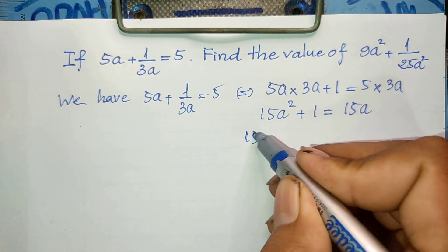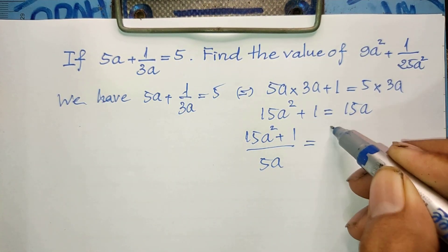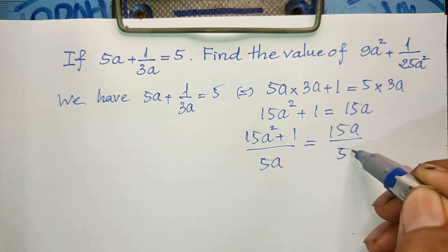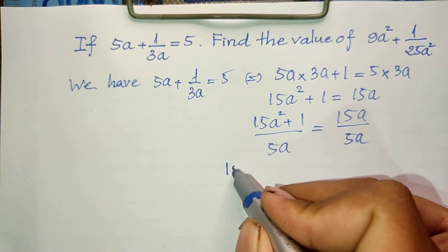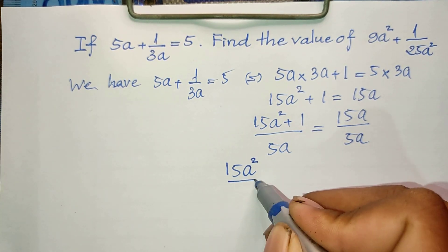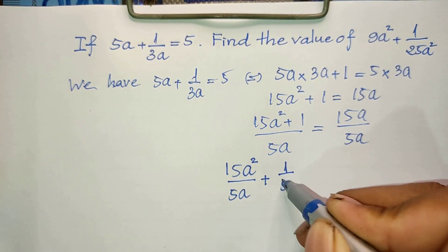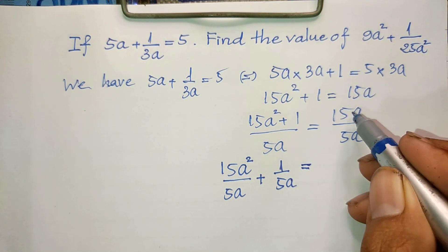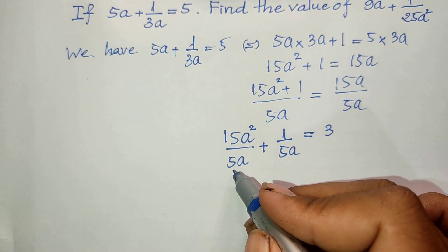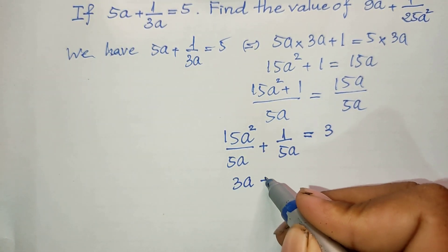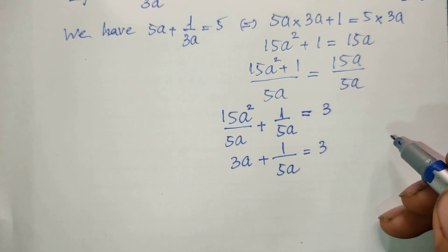So we get (15a² + 1) divided by 5a, which simplifies to 15a²/5a plus 1/5a, and this equals 3a plus 1/(5a), which equals 3.